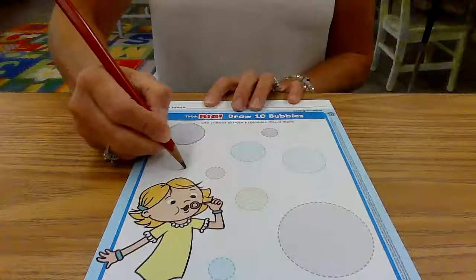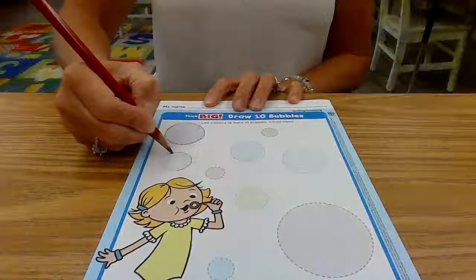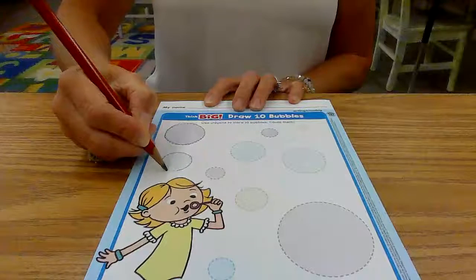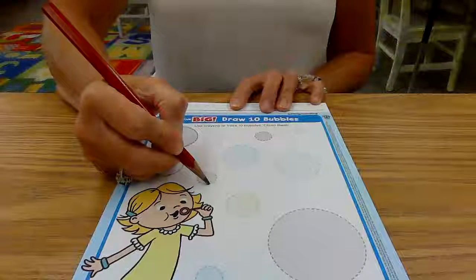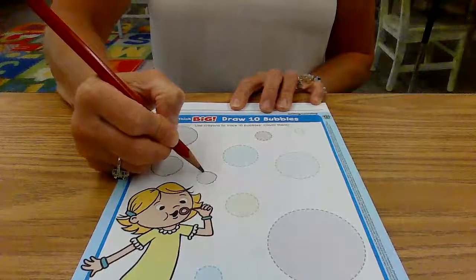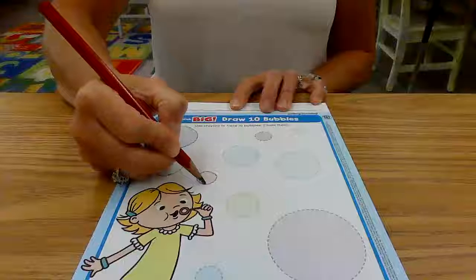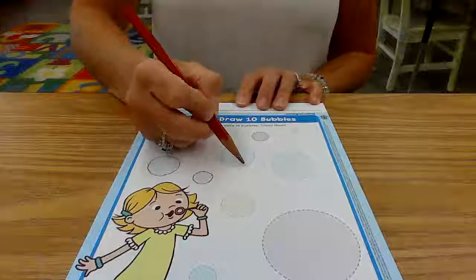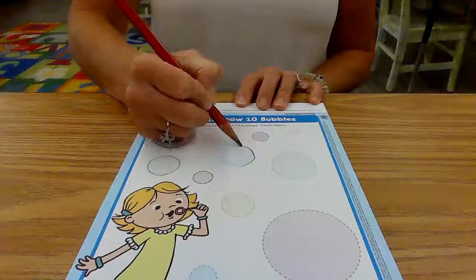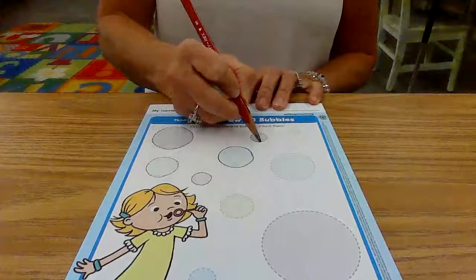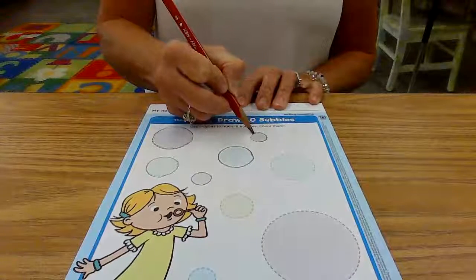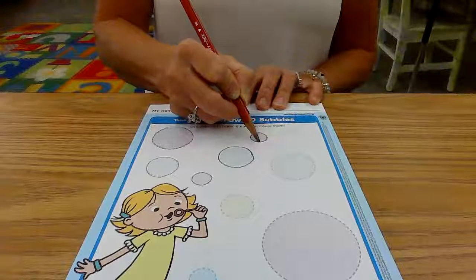One. Now let's start right here. Follow the lines all the way around. Two. This one's a little bit smaller. Three. Four. Five.